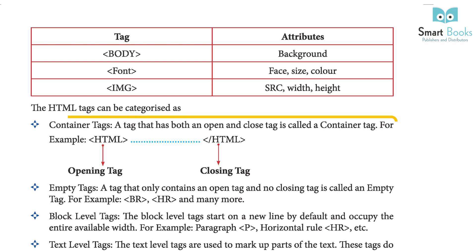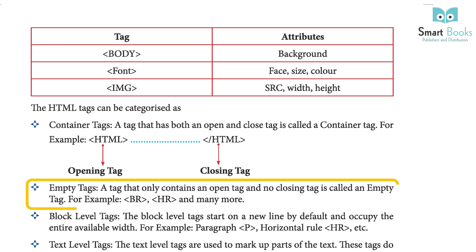HTML tags can be categorized as: Container tags – a tag that has both an opening and a closing tag is called a container tag, for example, the HTML opening and closing tags. Empty tags – a tag that only contains an opening tag and no closing tag, for example, BR, HR, and many more.